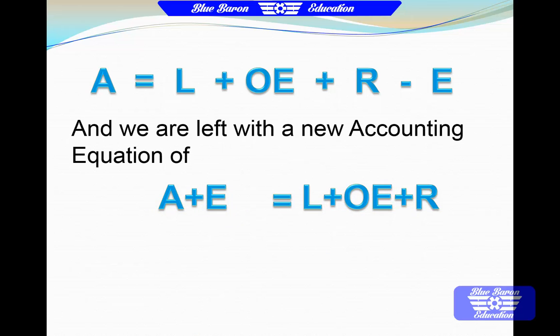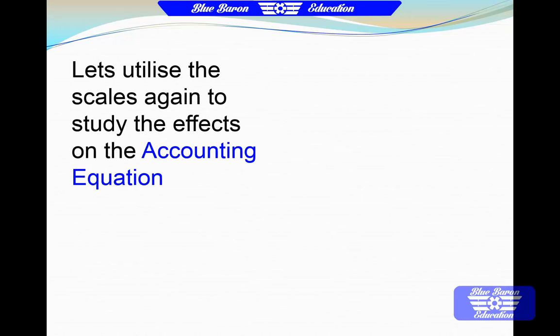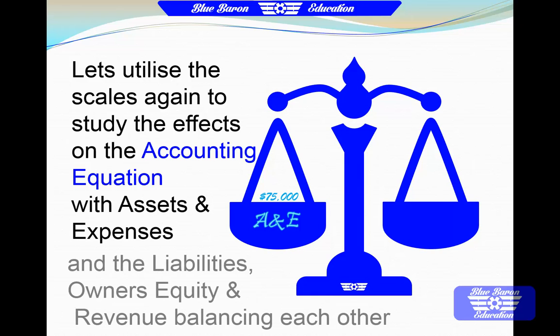So this is our new accounting equation: assets plus our expenses equals our liabilities plus our owner's equity plus our revenue. Let's utilise the scales again to study the effects on this new accounting equation, with our assets and our expenses on the left, and our liabilities, owner's equity and revenue balancing out on the right.